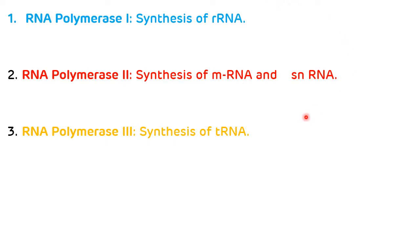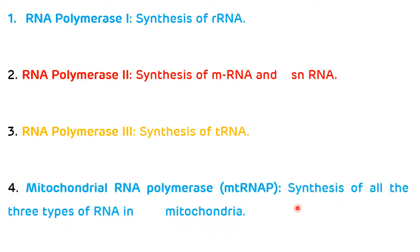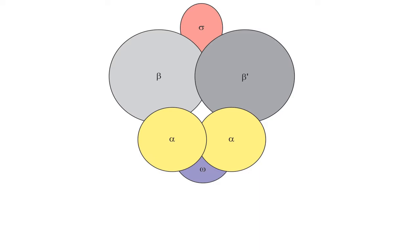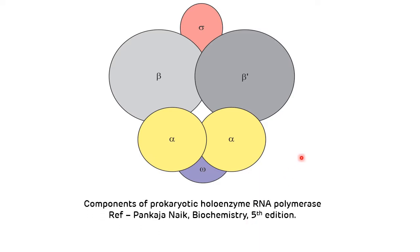The mitochondrial RNA polymerase synthesizes all three types of RNA present in the mitochondria. This picture shows the structure of the holoenzyme, which is the active RNA polymerase enzyme in prokaryotic cells. This RNA polymerase consists of five subunits: 2 alpha, beta, beta prime, and omega, which are collectively known as the core enzyme.